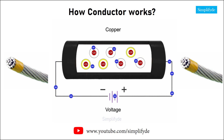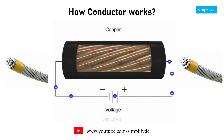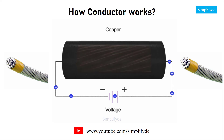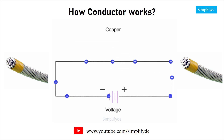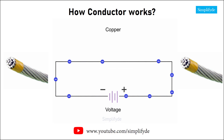Materials that have free electrons and allow electrical current to flow easily are called conductors. Conductors, such as copper, have low resistance to electrical current flow and thus are used extensively in electrical circuits.